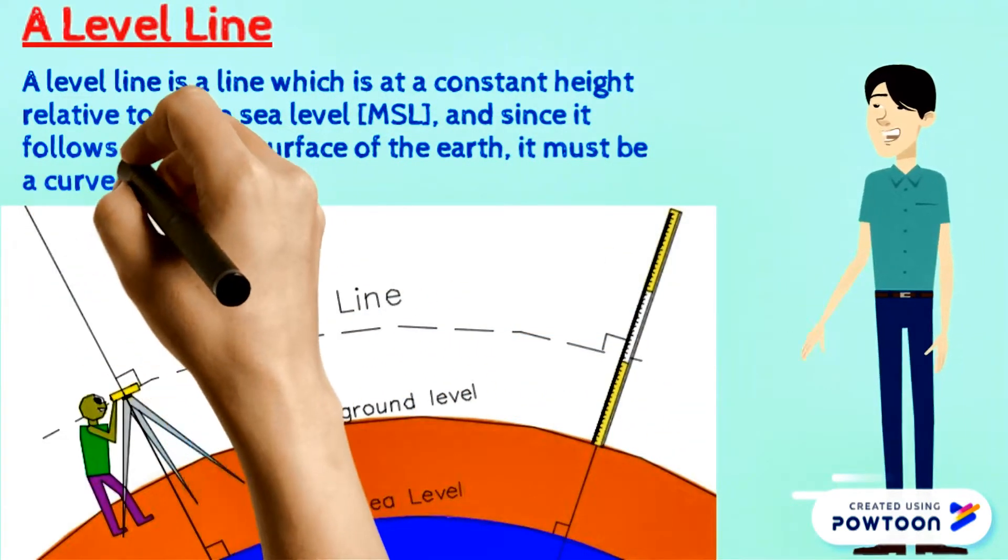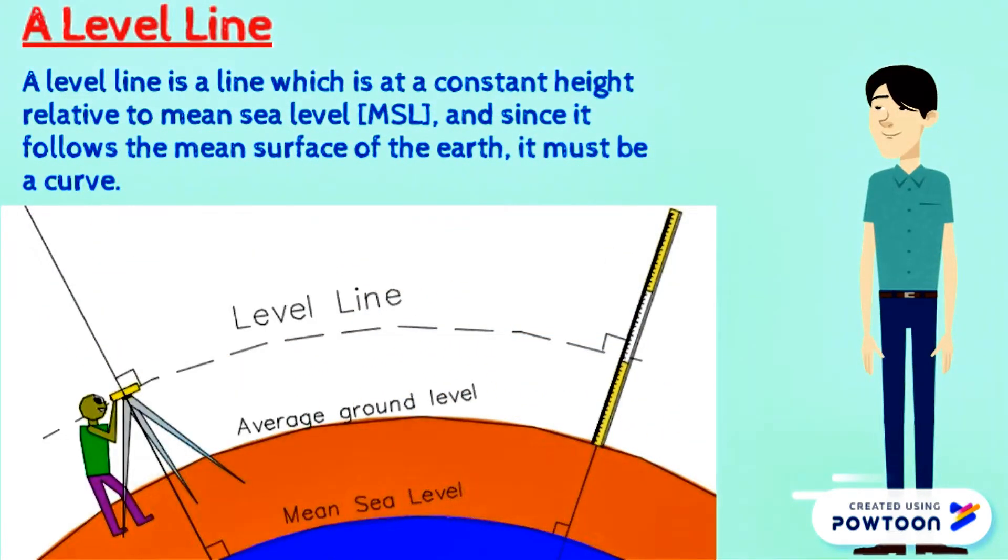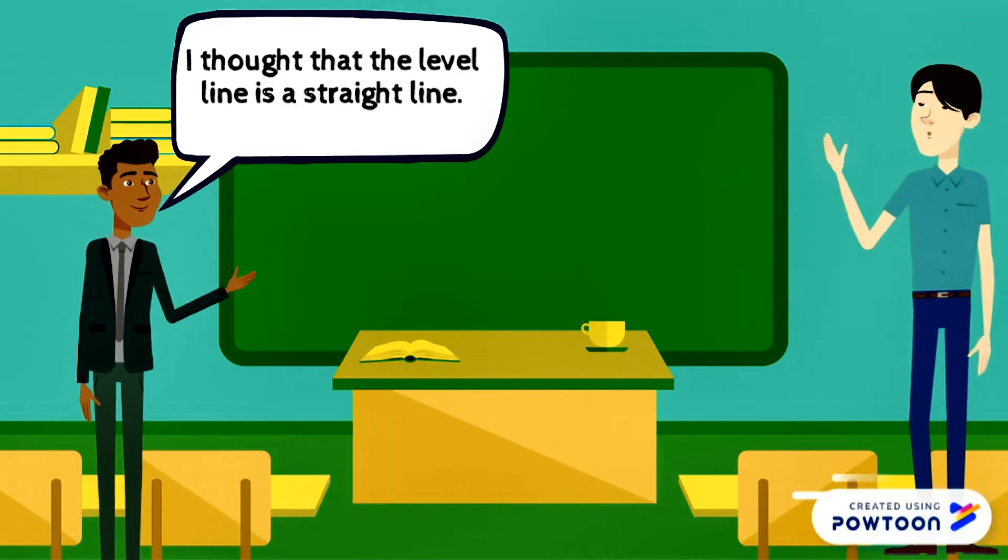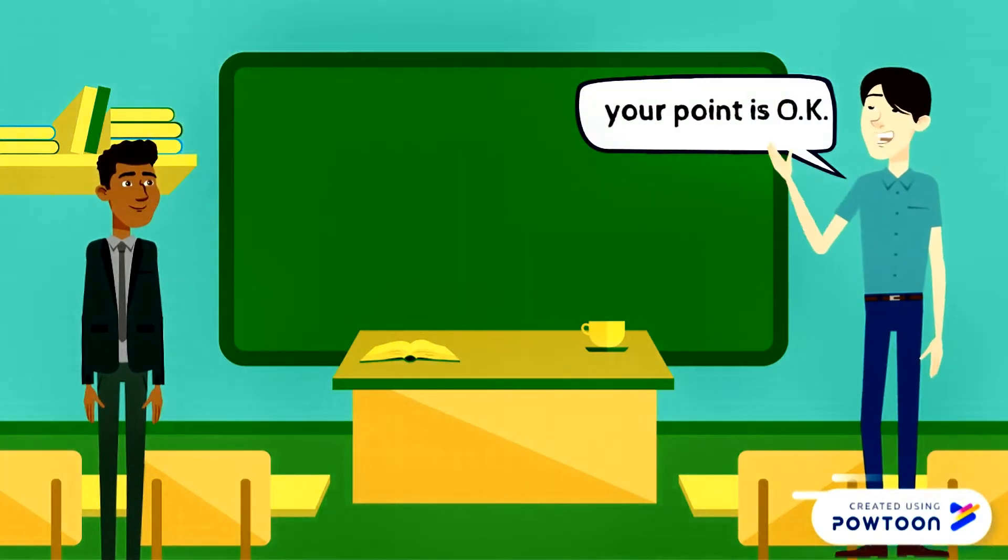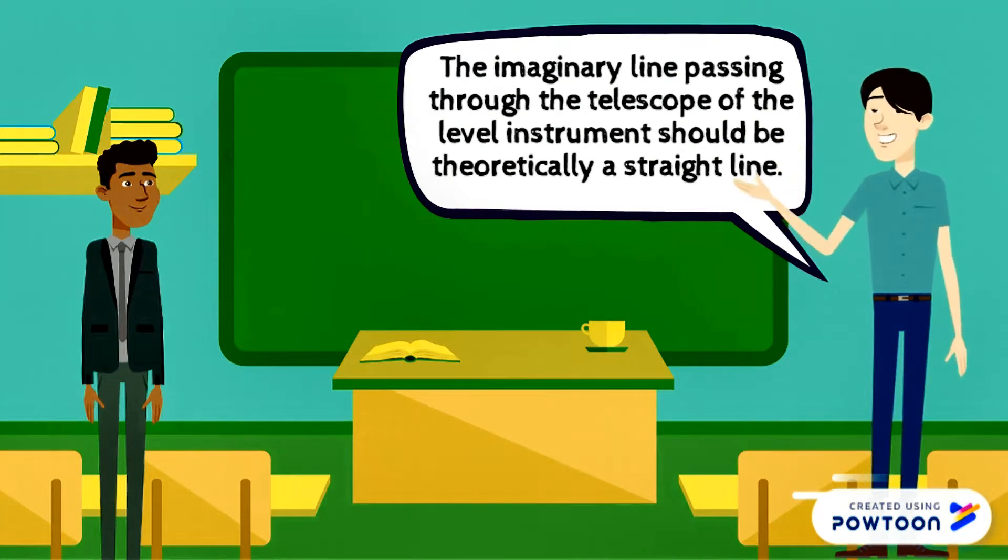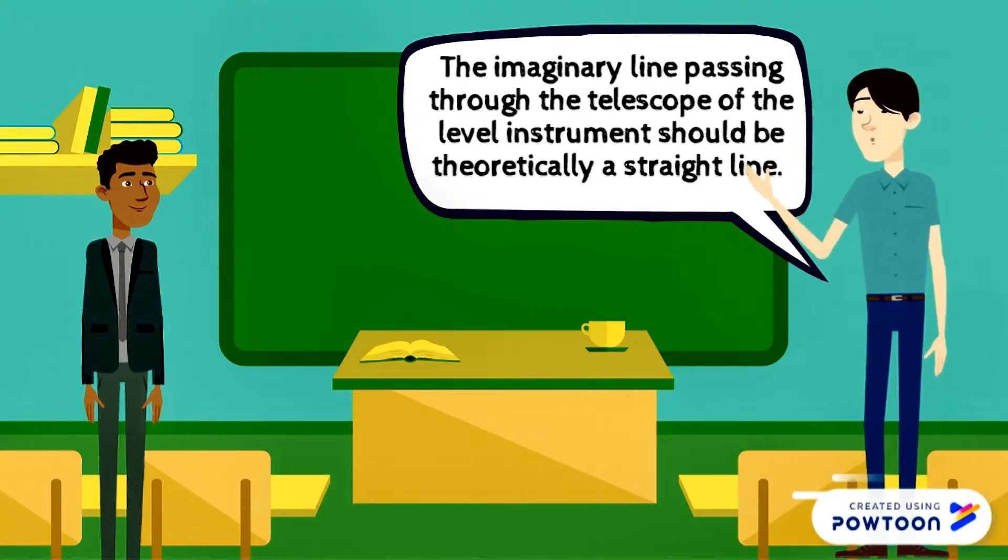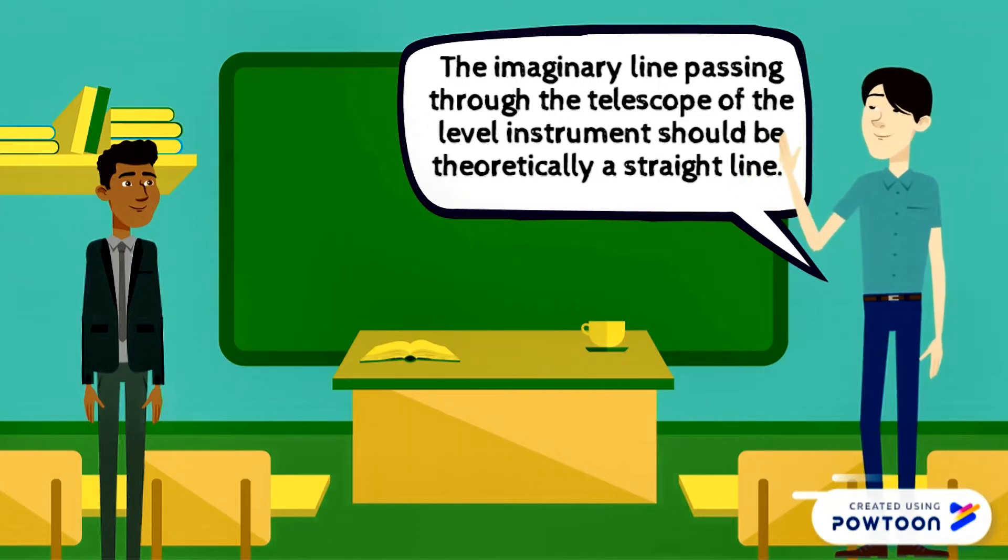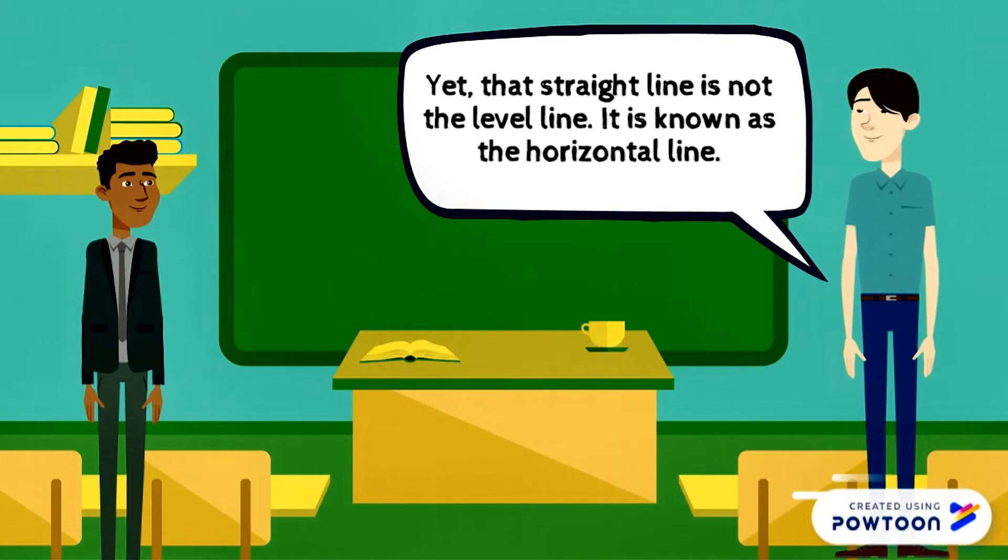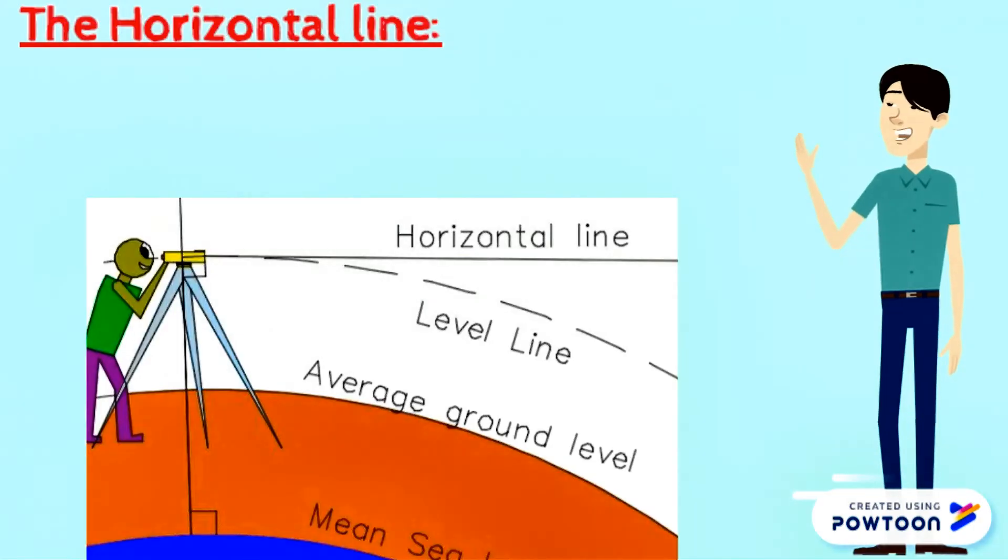I thought that the level line is a straight line. Your point is okay. The imaginary line passing through the telescope of the instrument should be theoretically a straight line, yet that straight line is not the level line. It is known as the horizontal line. We'll see what the horizontal line is.